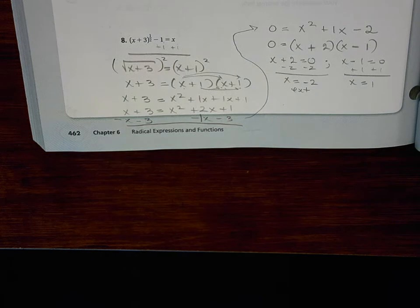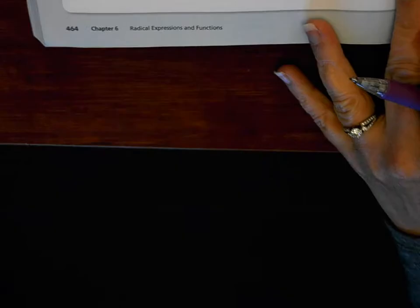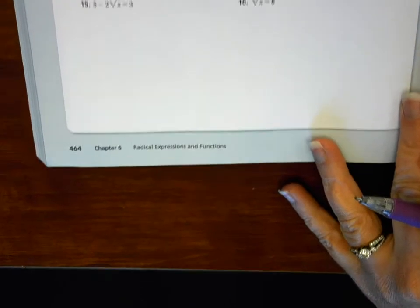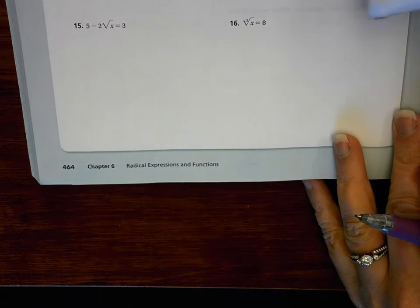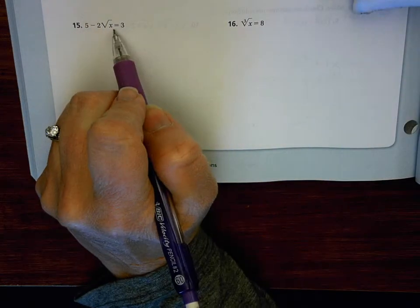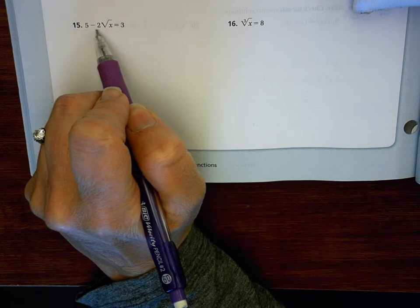All right. And then, okay, take a look at this is problem number 15 on page 464. So I want to get x by itself, or the radical by itself. So I can't add these together, because I'm looking to solve.